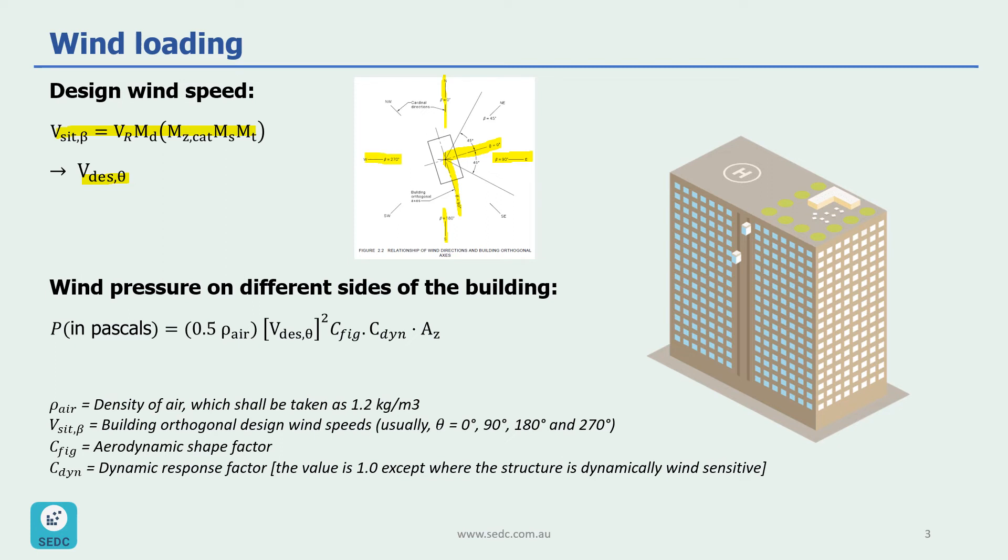A conservative approach is to design the structure using the wind speed and multipliers for the worst direction. For example, if we have a building located on a hill, then it may be easily checked that the V_site,β on the exposed face would be the worst case. To simplify the design, this value could then be used as design wind speed for all directions on this building.